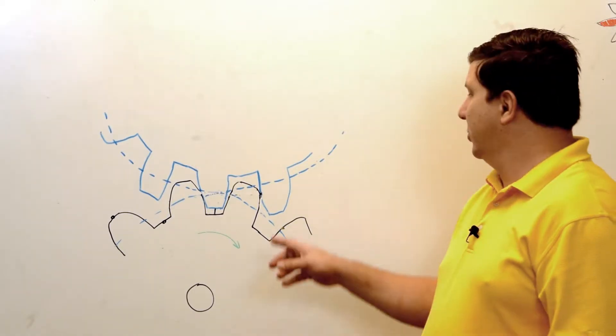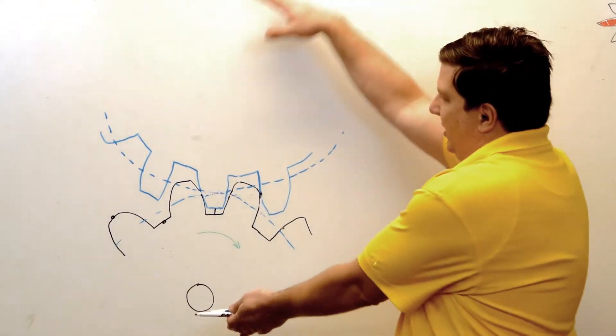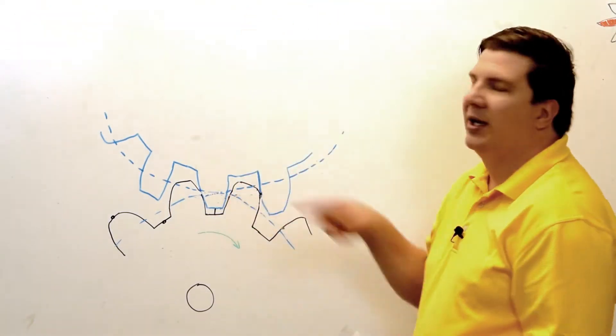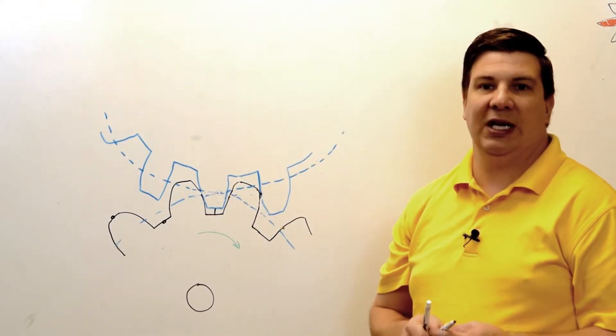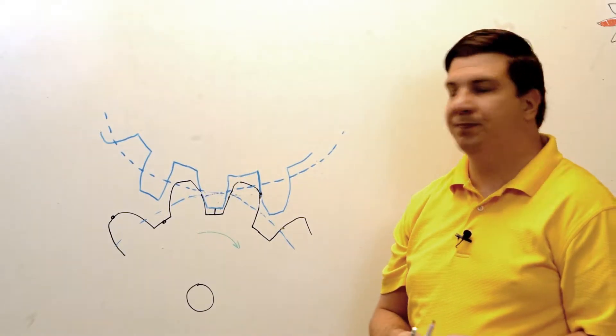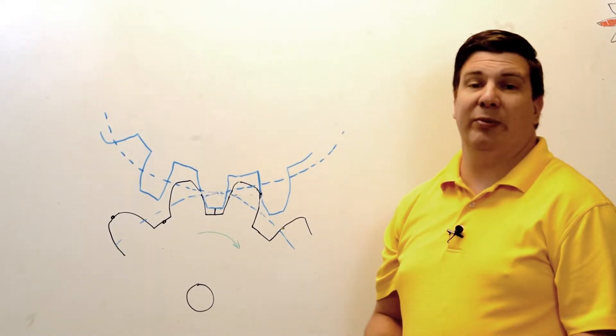So, this right here is where backlash comes into play. I can adjust the center distances to increase or decrease that gap as I desire. So, moving on, we're going to talk about the pitch circle.